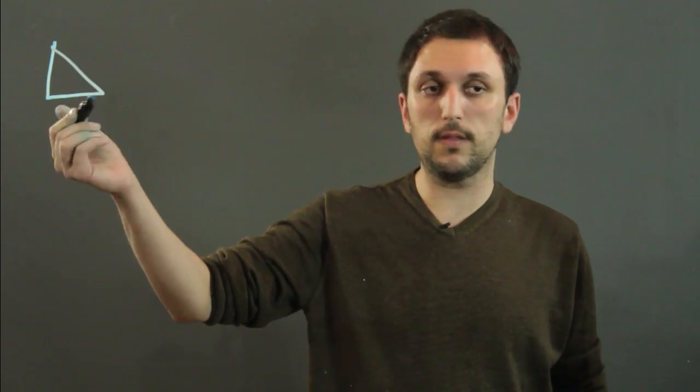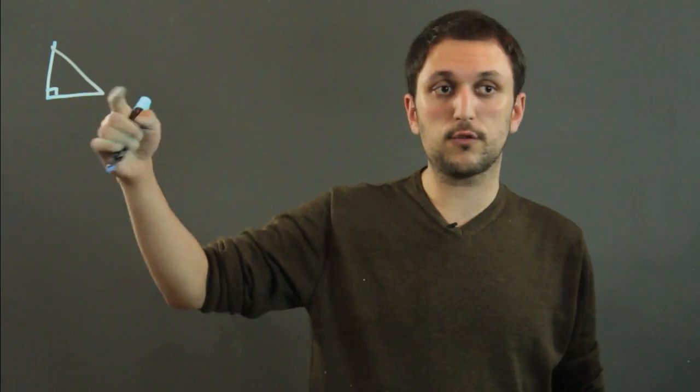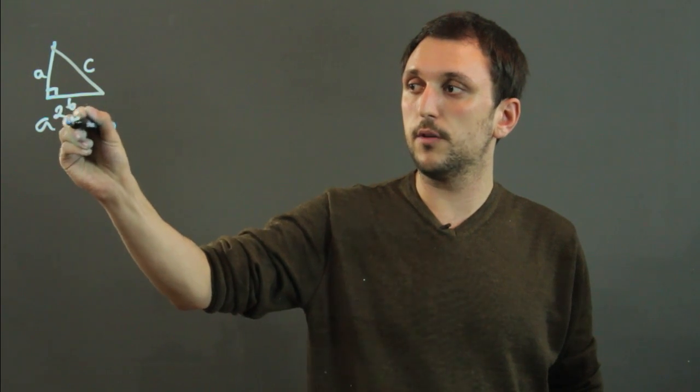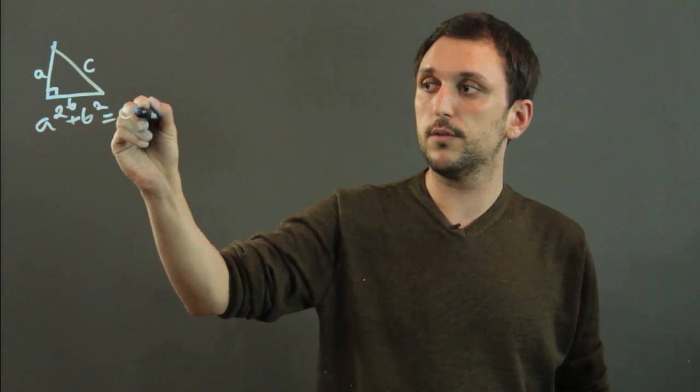Now if you have a right triangle it's very easy because we can use the Pythagorean theorem which says that for any right triangle with side a, b, and c we just say a squared plus b squared equals c squared.